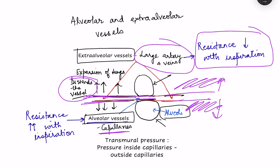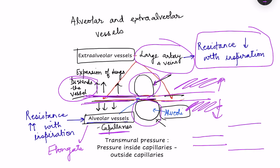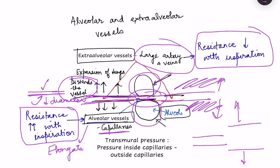Alveolar vessels behave differently because they are subjected to alveolar pressure. When the alveoli expand, the alveolar vessels become elongated — they stretch longitudinally, which decreases their diameter. Decreased diameter means resistance within these alveolar vessels increases with inspiration. In simple terms: expansion of alveoli compresses these vessels. So extraalveolar vessels distend with inspiration while alveolar vessels compress with inspiration.